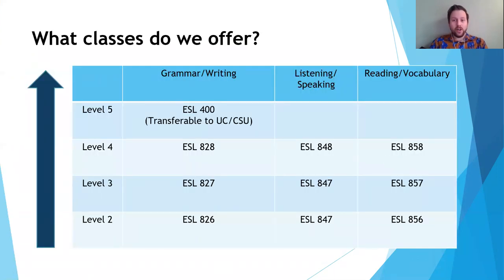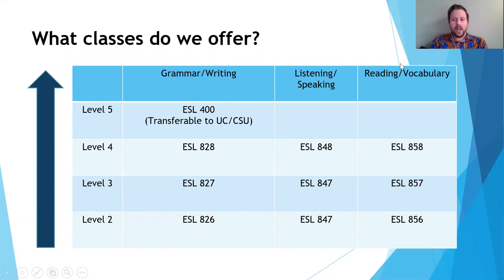Here is a chart showing the classes and levels that we offer. Most of our classes range from level 2 to level 5, from low intermediate to high intermediate to low advanced and high advanced. So most of our classes are either intermediate or advanced level. We offer classes in grammar and writing, listening and speaking, and reading and vocabulary. These skills are taught together in the same class.